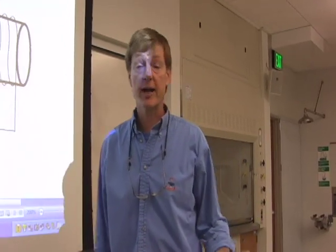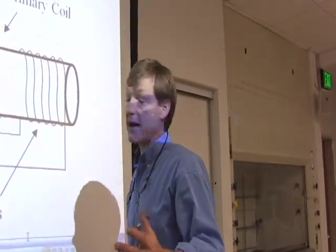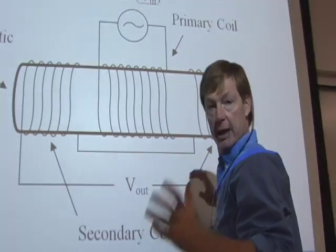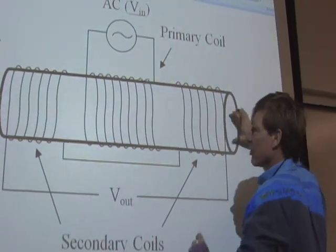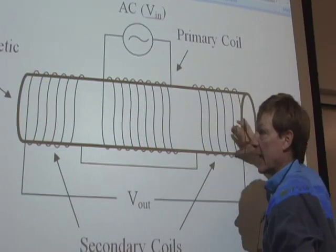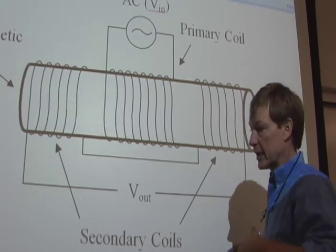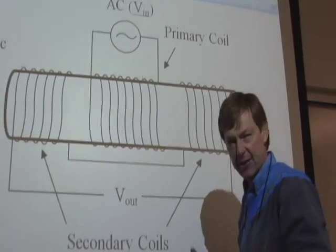The linear variable differential transformer works off of the transformer effect. So what you have is you've got a core here, and it's a movable core. This core slides, or maybe something inside the core slides in and out. And the piece in there, that core, is ferromagnetic. So it helps the magnetic field of a fluctuating current. It passes it through better.